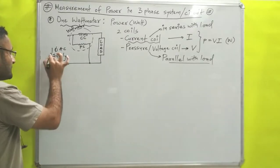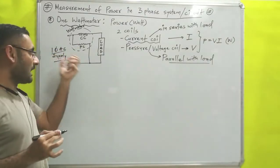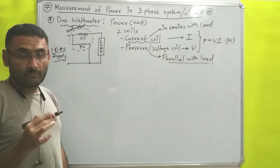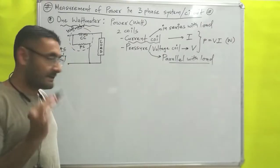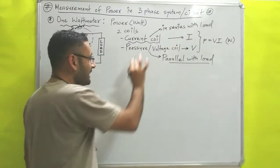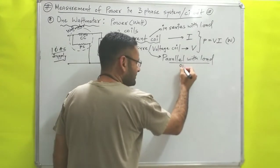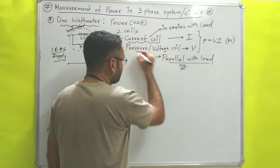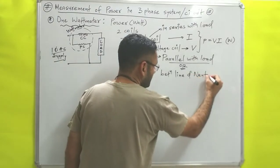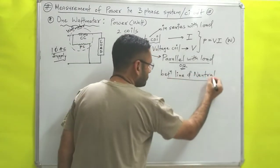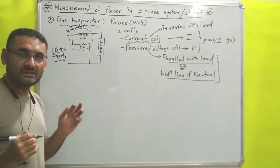That is the story for single-phase AC supply — with the help of one wattmeter we can measure the power. Now we want to find out the power of a three-phase AC system or circuit. The procedure is the same: current coil is connected in series with the load and the pressure coil is connected in parallel with the load, or more specifically the pressure coil is connected between line and neutral.